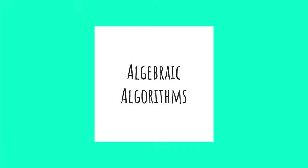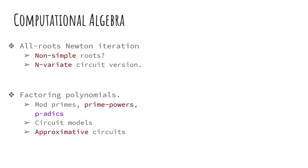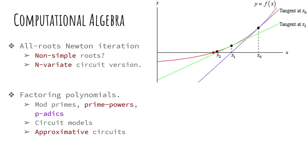Let me move to the second part: algebraic algorithms — computational algebra, number theory, and related problems. The first topic is Newton iteration, which is highly popular across all engineering areas. Newton iteration finds real roots of f(x) = 0 iteratively: starting at x₀, each step produces a value closer to the actual root. In three steps it already converges very fast and close to the actual root. It has generalizations to multivariate polynomials, optimization, gradient descent, and deep learning.